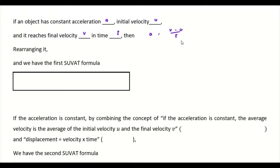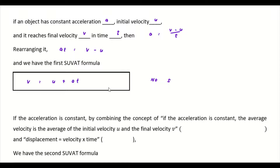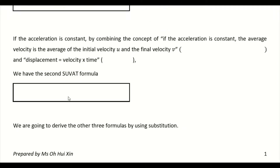...then we have a formula: acceleration equals final velocity minus initial velocity, divided by time. Rearranging to remove the fraction, we get at = v − u, and then making v the subject gives us our first SUVAT formula: v = u + at. Notice that this formula does not contain the variable s.